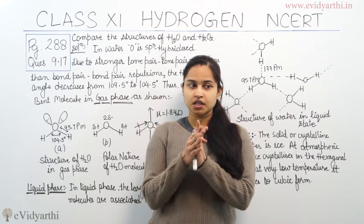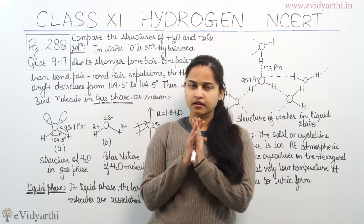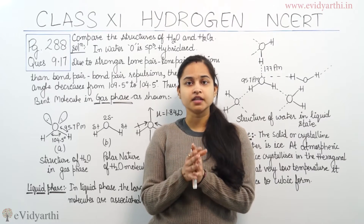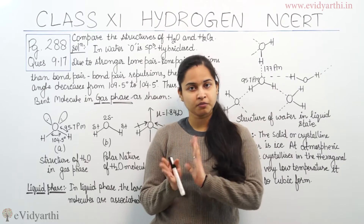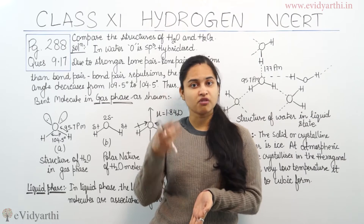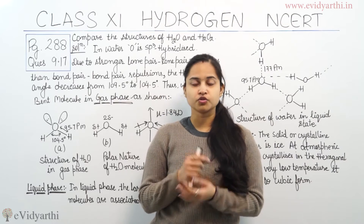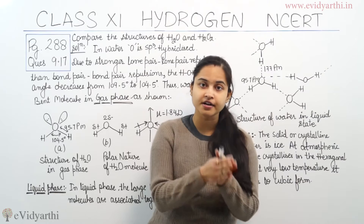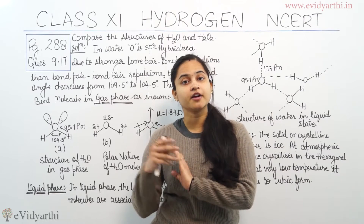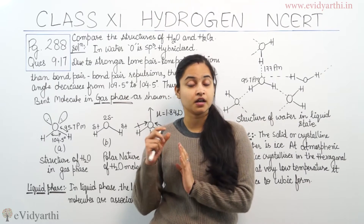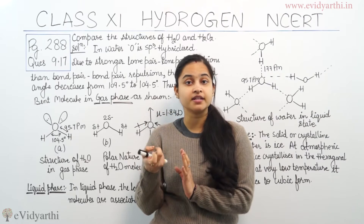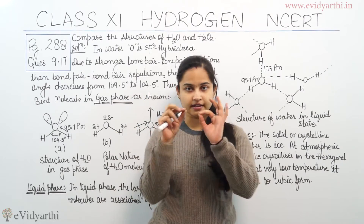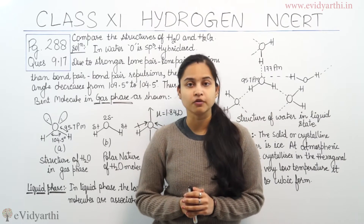In H2O, there are two lone pairs of electrons. Due to lone pair-lone pair repulsion, which is stronger than bond pair-bond pair repulsion, the H2O bond angle decreases from 109.5 degrees to 104.5 degrees. The angle decreases due to lone pair-lone pair repulsion.